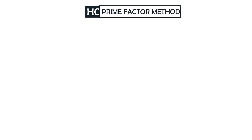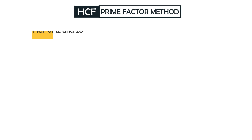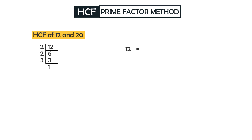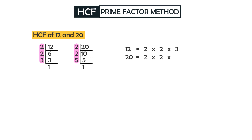The next method is the prime factor method. Expressing a number as a product of prime numbers is known as prime factorization. Let's find the HCF of 12 and 20. 12 = 2 × 2 × 3, and 20 = 2 × 2 × 5. The common prime factors are a pair of 2 and another pair of 2, so 2 × 2 = 4. The highest common factor of 12 and 20 is 4.